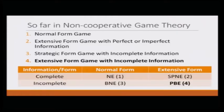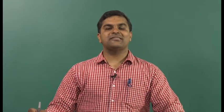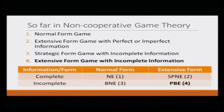So far, let us look at what we have done in this course. We have talked about normal form game — how to model strategic interaction when players are moving simultaneously — and the solution concept we used was Nash equilibrium. After that we realized that in some scenarios strategic form game is not adequate, so we also talked about extensive form game, represented using a game tree. We learned the solution concept of backward induction, and then the equilibrium concept was sub-game perfect equilibrium.